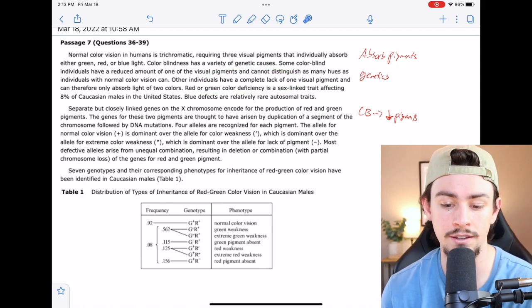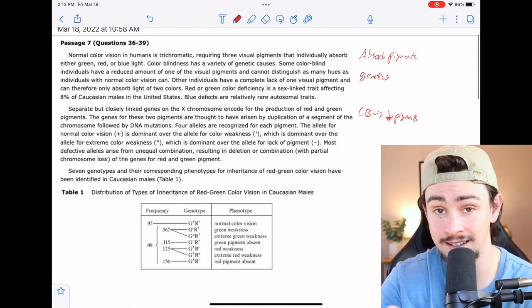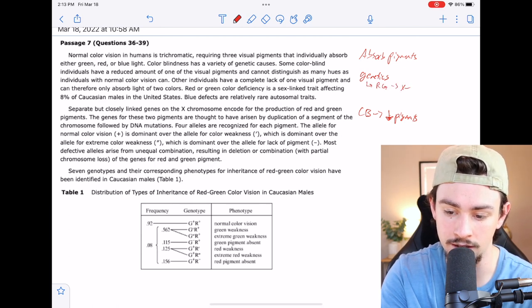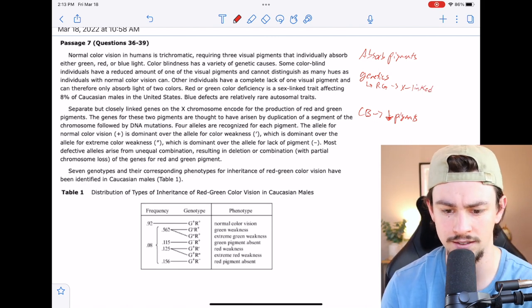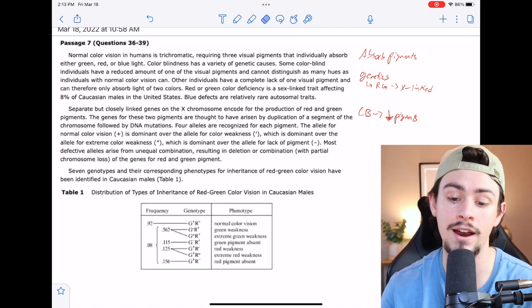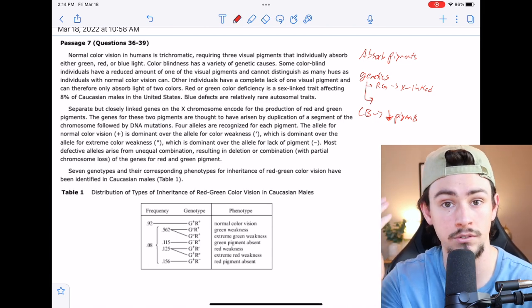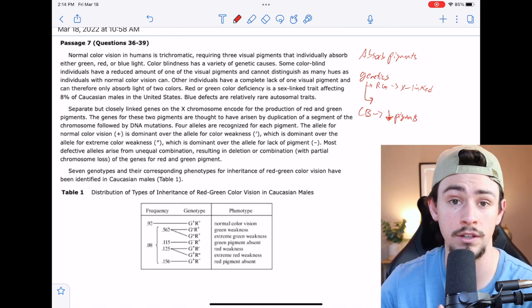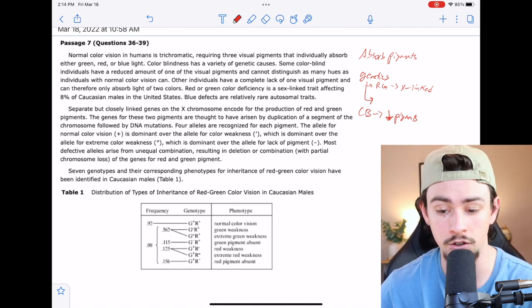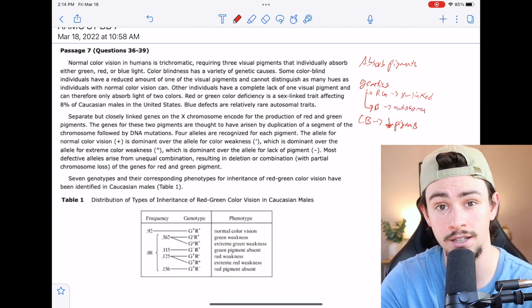Red or green color deficiency is a sex-linked trait affecting 8% of Caucasian males. So under genetics, because it said sex-linked, I'm going to put we've got red-green and it is due to sex-linked or X-linked gene, which is the same thing. Blue defects are relatively rare and they are autosomal traits. Remember there are two ways to inherit traits: sex-linked, when the gene is attached to the X or Y chromosome, or autosomal traits, when we're somewhere on one of the other 23 chromosomes. So we have this blue color deficiency and that is an autosomal trait.